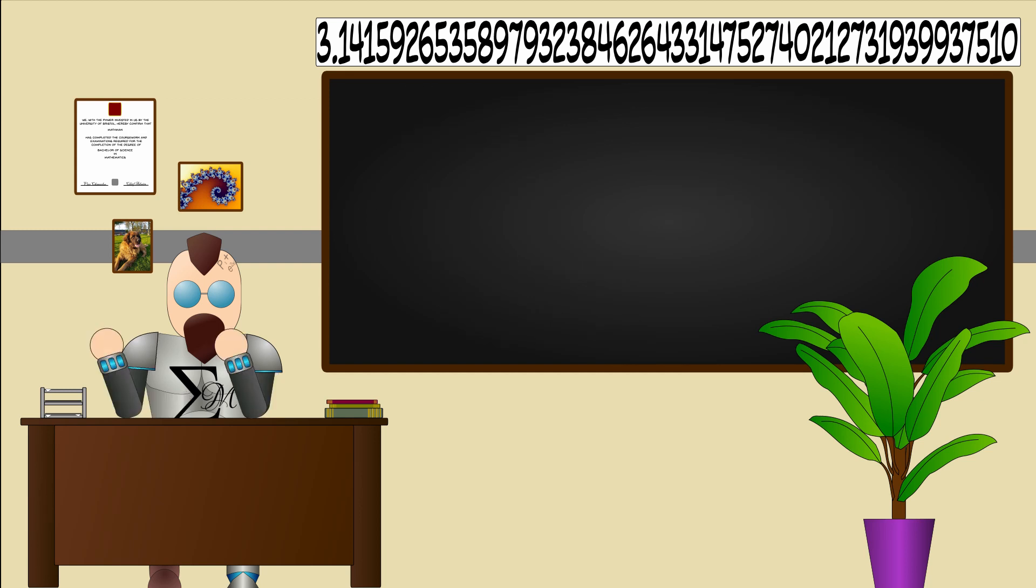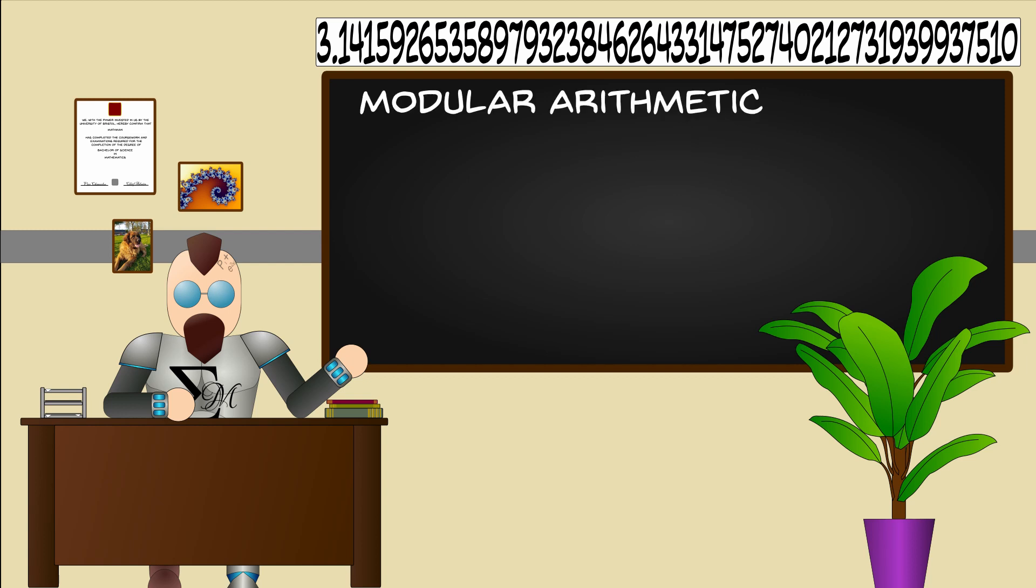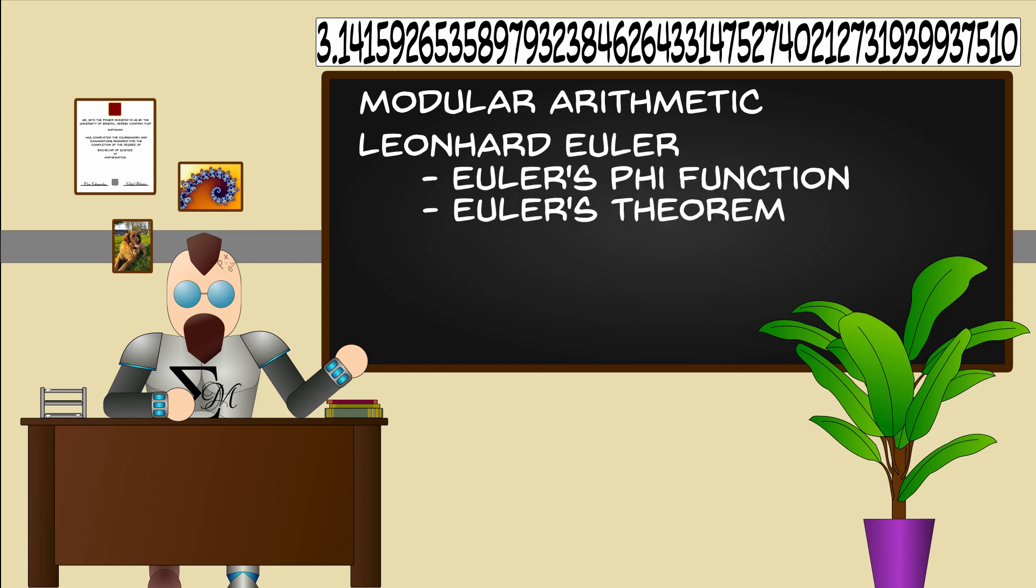To see how public key cryptography works, let's have a look at how RSA works. First, we are going to go over some mathematical concepts, namely modular arithmetic, and some of Euler's work in elementary number theory, Euler's phi function and Euler's theorem, before moving on to RSA itself.